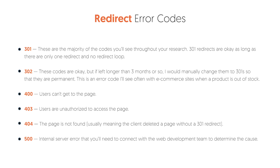You can use 302s, but you don't want to use them for more than three months — that's not good. A 400 error means users can't get to that page. A 403 error means that page is not authorized. A 404 error means the page is not found — you want to redirect these using 301 redirects. 500 errors are internal server or web development errors — send those to anyone technical on your team and they can fix them.